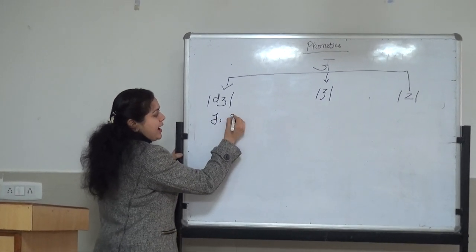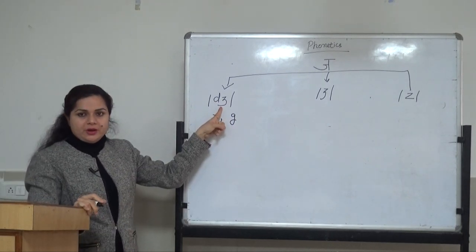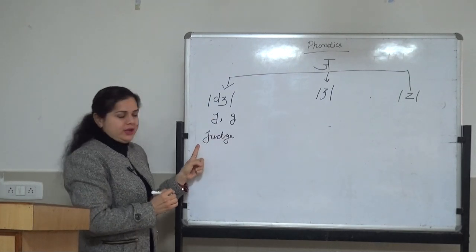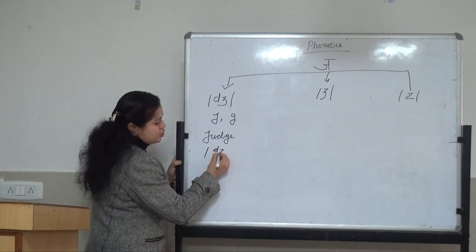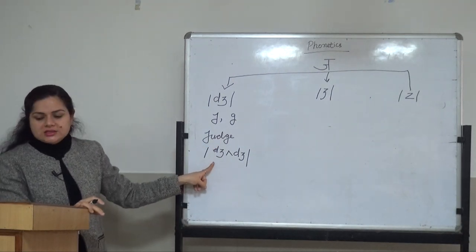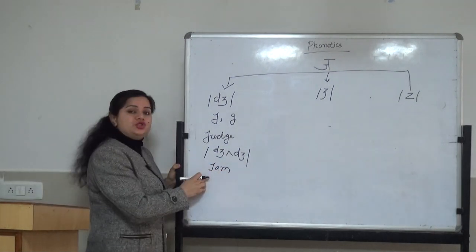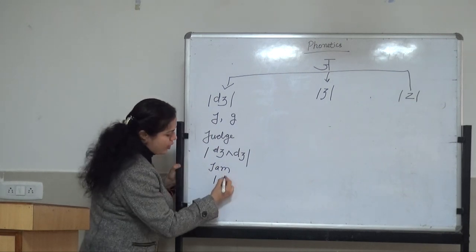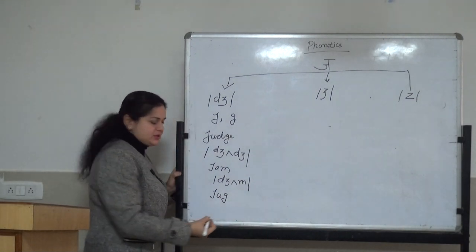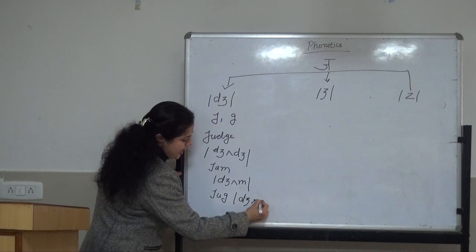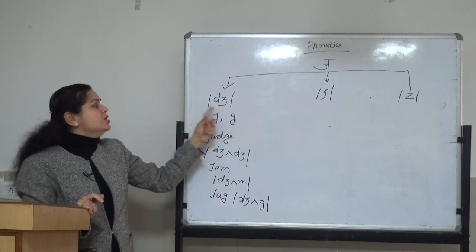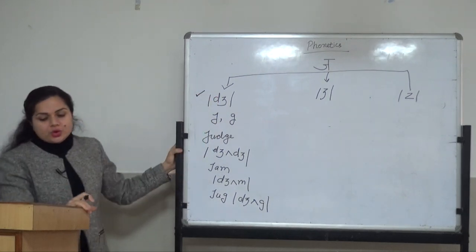My dear friends, if there is a /dʒ/ sound in the spelling, and the spelling contains J or G, we will use this symbol — for example 'judge.' In 'judge,' there is a sound of /dʒ/ and in spelling we have J, so we write it with this symbol: /dʒʌdʒ/. Similarly 'jam' — the /dʒ/ sound is there and in spelling we have J and G, so we use this kind of symbol.